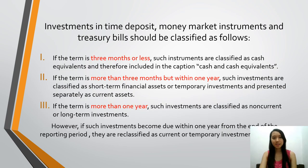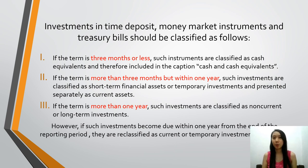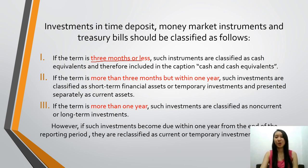In this slide, investments in time deposit, money market instrument, and treasury bills should be classified as follows. If the term is three months or less — you already know the answer — such instruments are classified as cash equivalents, and therefore included in the caption of cash and cash equivalents.